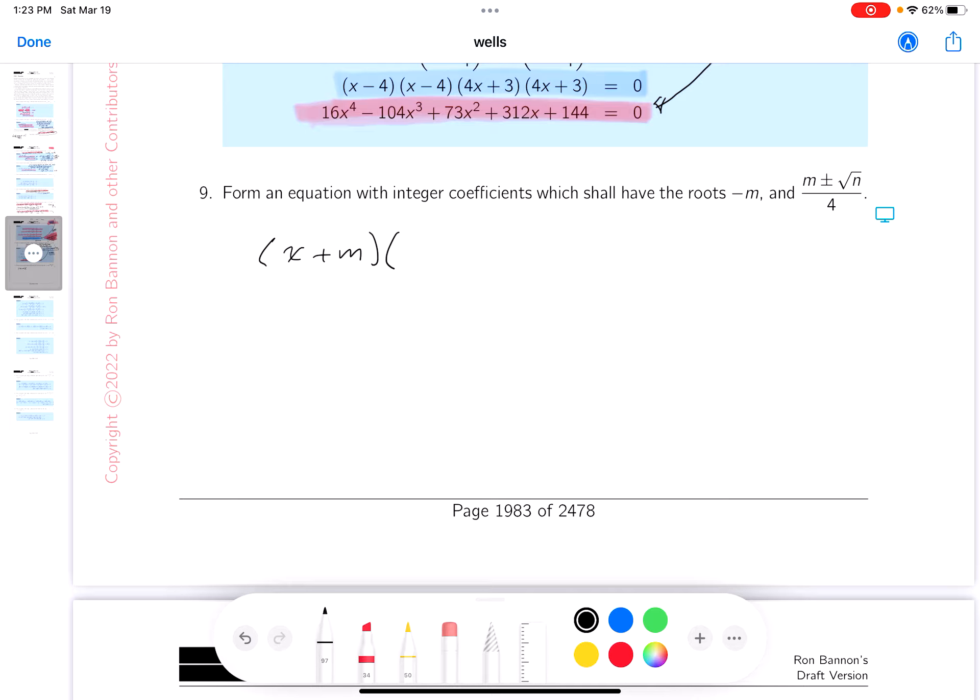And yet they got a little more complicated, but it's going to be x minus, I'll write this down for you, m plus root n over 4, and it's going to be x minus m minus root n over 4, and that equals 0.